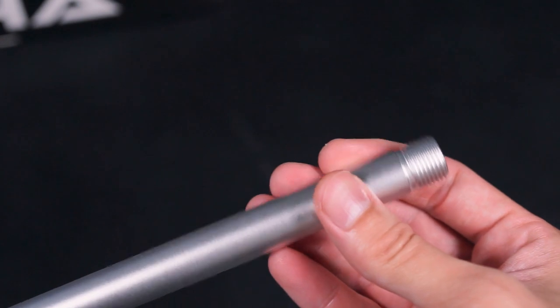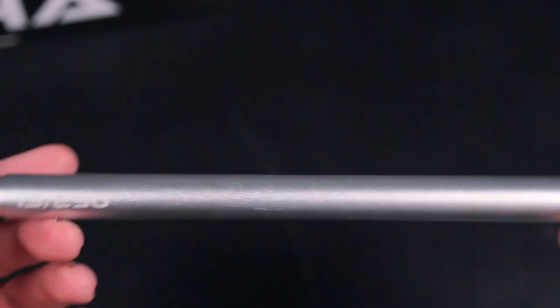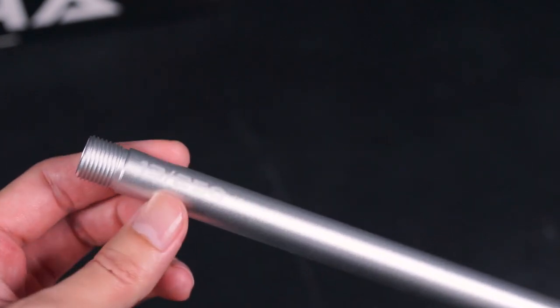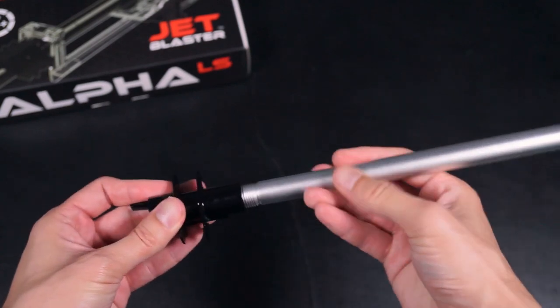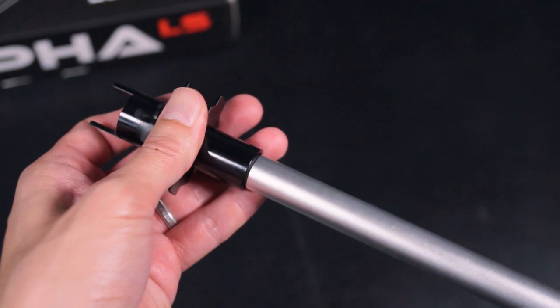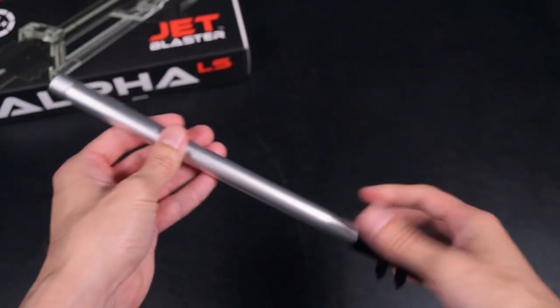Moving on to the duct gate assembly. The barrel that comes with the Alfa LS kit will be threaded on both ends. Thread in either end of the barrel into the duct gate. Do not over tighten the threading. Applying teflon paste or teflon tape to the threads will give it a better seal.